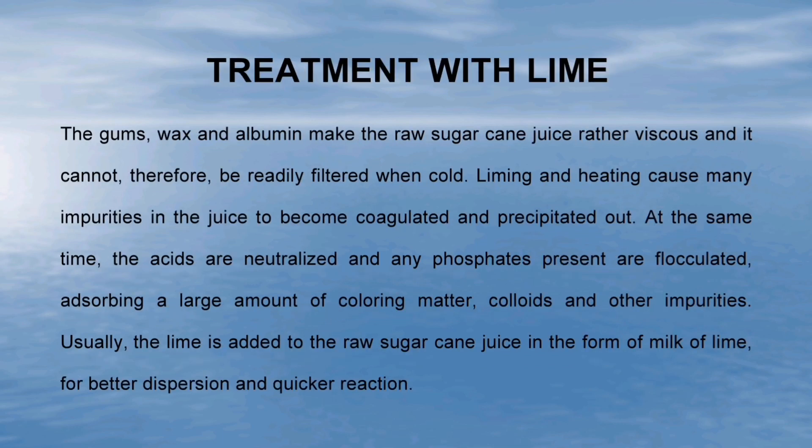It's very interesting to know how impurities in sugarcane juice can be removed by treatment with lime. The gums, wax and albumen make the raw sugarcane juice rather viscous and it cannot, therefore, be readily filtered when cold. Liming and heating cause many impurities in the juice to become coagulated and precipitated out. At the same time, the acids are neutralised and any phosphates present are flocculated, adsorbing a large amount of colouring matter, colloids and other impurities. Usually, the lime is added to the raw sugarcane juice in the form of milk of lime, for better dispersion and quicker reaction.